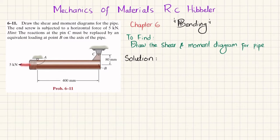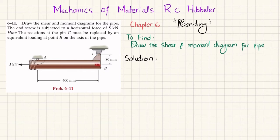You can see this is the pipe and at the thread section we have a 5 kilonewton axial load, and we have to draw the shear force and bending moment diagram. The hint is that the reaction at C must be replaced — you have to find the reaction and then transfer it to the axis of the pipe at point B.